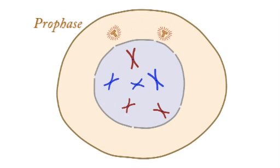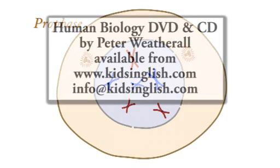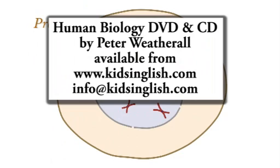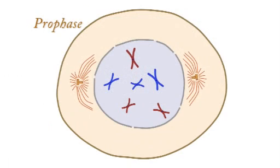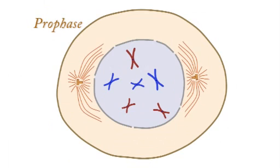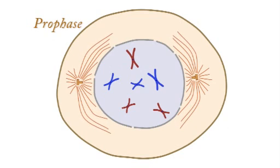At the same time, the centrosomes begin to move to opposite ends of the cell, and fibers, called microtubules, extend from the centrosomes and start to form a mitotic spindle.